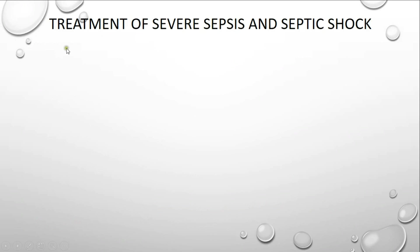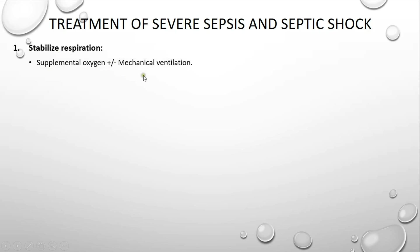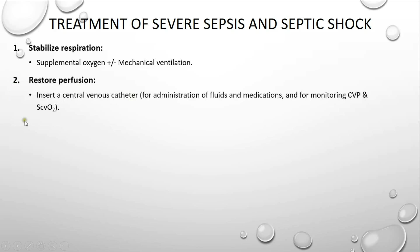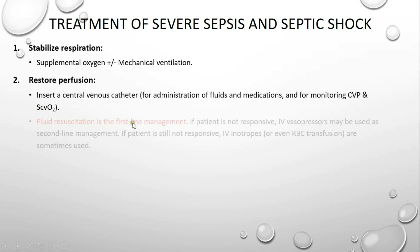Coming to the treatment of severe sepsis and septic shock, there are three main steps. The first step is to stabilize respiration by ensuring supplemental oxygen with or without mechanical ventilation. The second step is to restore perfusion, usually by inserting a central venous catheter for administration of fluids and medications, and for monitoring CVP (central venous pressure) and ScvO2 (central venous oxygen saturation).